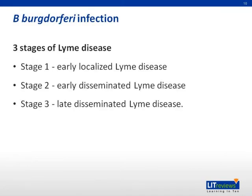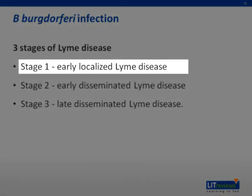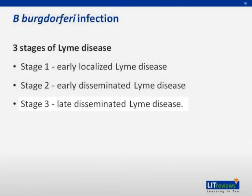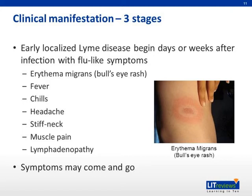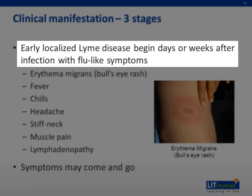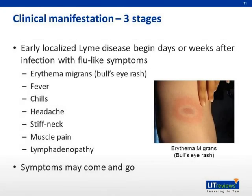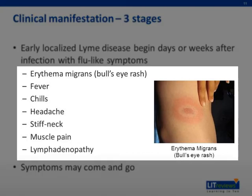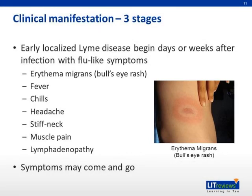Lyme disease can be divided into three stages: early localized Lyme disease, early disseminated Lyme disease, and late disseminated Lyme disease. Clinical manifestations of early localized Lyme disease begin days or weeks after infection with flu-like symptoms. Other symptoms characteristic of this stage include erythema migrans, stiff neck, muscle pain, and lymphadenopathy. The symptoms may come and go.